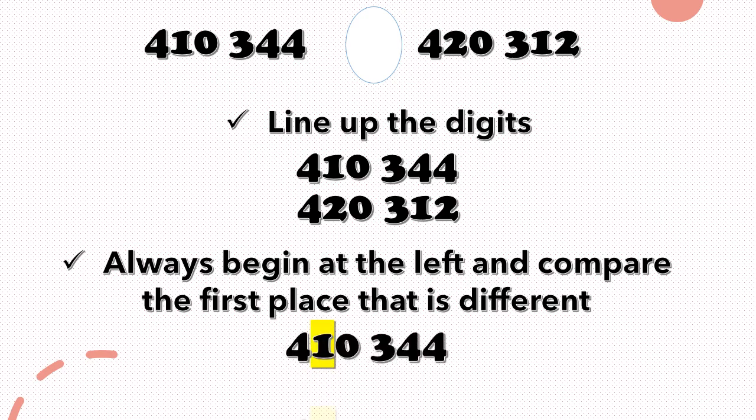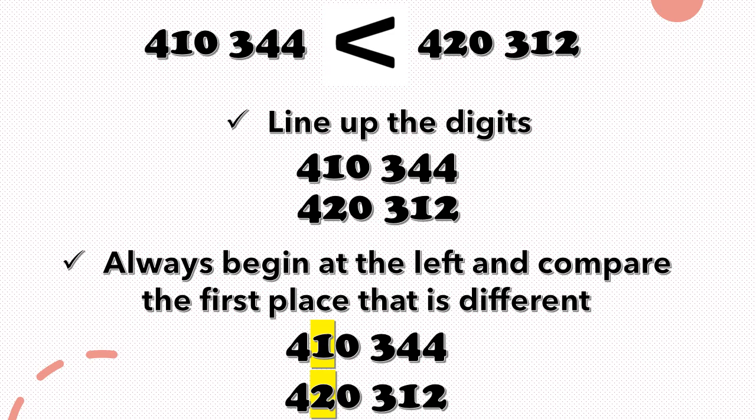You can see that in the 100,000 place, both numbers have 4. In the 10,000 place, there is a difference — this is the place we compare. The digit 1 is representing 10,000 in the first number, and the digit 2 is representing 20,000 in the second number. 420,312 is greater, so we place our greater than sign.